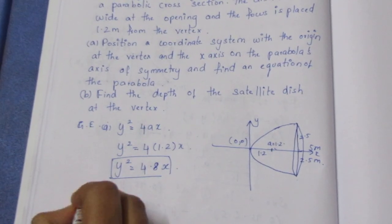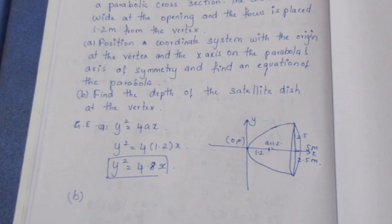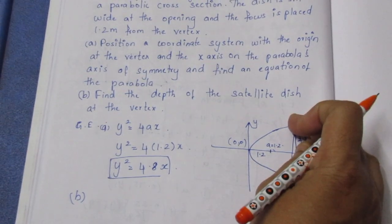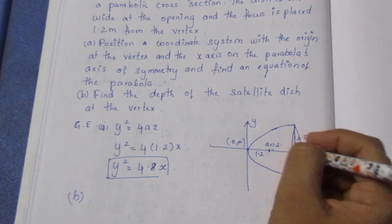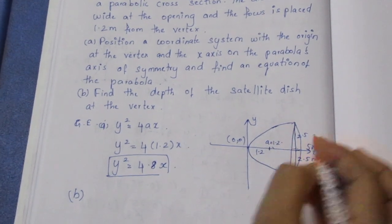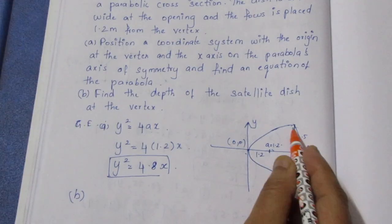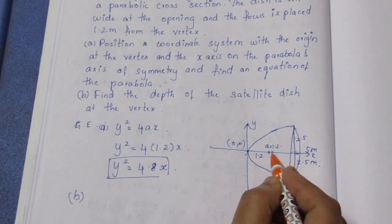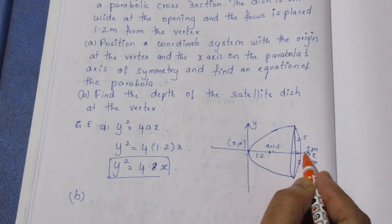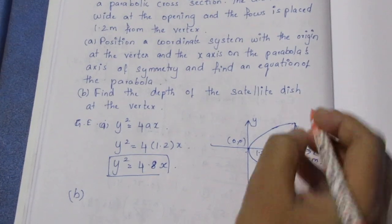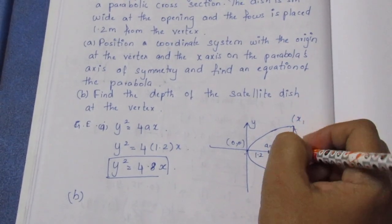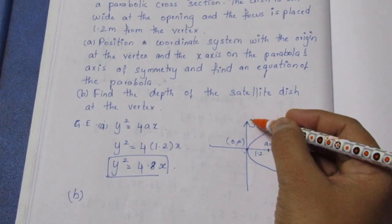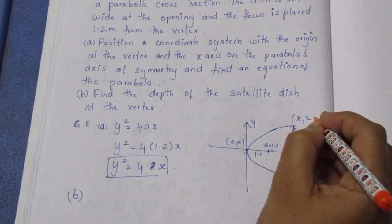Now part b. Find the depth of the satellite dish at the vertex. The depth of the satellite is this. This is the depth. Now this is 2.5, and the focus is 1.2. We need to find how long this depth is. Let's see, this is the x-axis, and the y-axis is the depth.